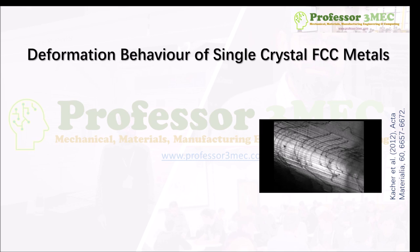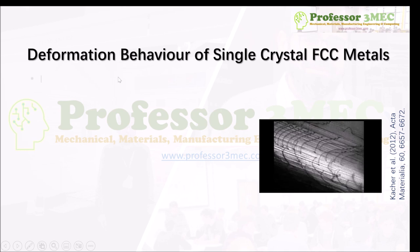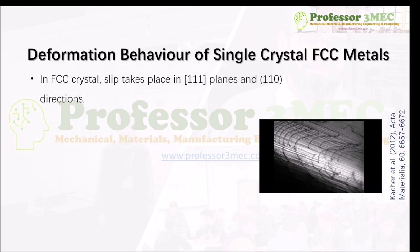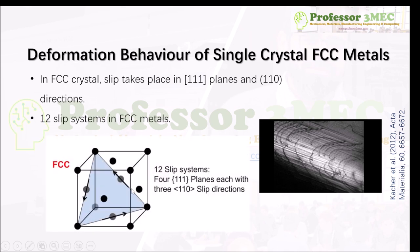For deformation in an FCC single crystal, dislocations move in a certain direction along a certain plane. For FCC material there are always four slip planes of the {111} type, and slip always takes place in the ⟨110⟩ direction. There are four {111} planes and three ⟨110⟩ directions per plane, giving 4×3 = 12 slip systems in total. The dislocation can move along any one of these 12 slip systems, and later I will discuss how to decide which slip system initiates dislocation motion first.